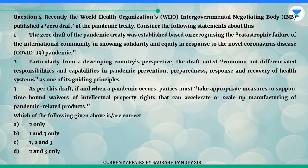Three: As per this draft, if and when a pandemic occurs, parties must take appropriate measures to support time-bound waivers of intellectual property rights that can accelerate or scale up manufacturing of pandemic-related products. Which of the following given above is correct? A. Two only. B. One and three only. C. One, two and three. D. Two and three only.